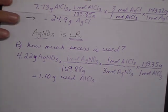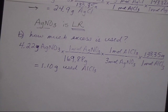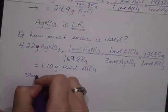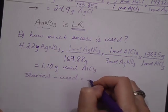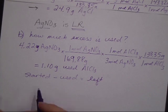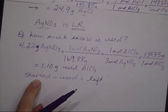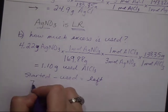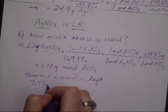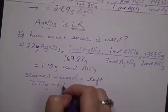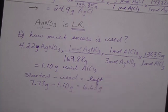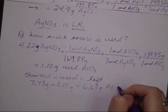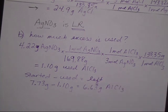To find the excess that remains I then can take the amount I started with minus the amount that I used, and that's how much I have left. The amount I started with was given in the problem, 7.73 grams minus the 1.10 grams leaves me with 6.63 grams of aluminum chloride. Alright good job.